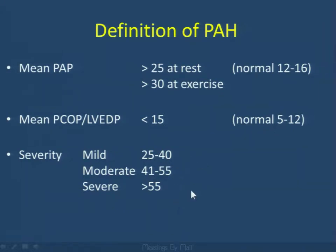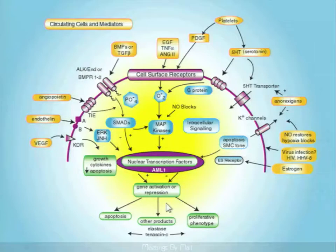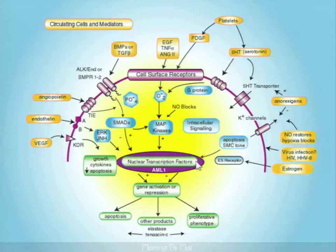The pathophysiology ranges from cellular and molecular level diagnoses related to vasodilation with prostacyclins and nitric oxide, vasoconstriction, endothelin agents, serotonin, clearly coagulation disorders, inflammatory disorders, and endothelial cell dysfunction. These circulating and cellular mediators are illustrated showing the numerous interactions that can lead to cell surface damage and nuclear transcription factors.